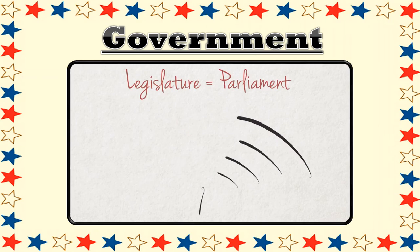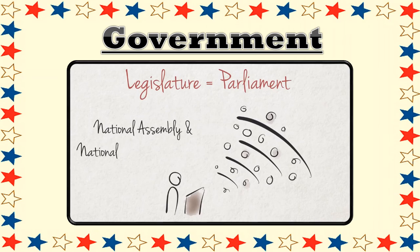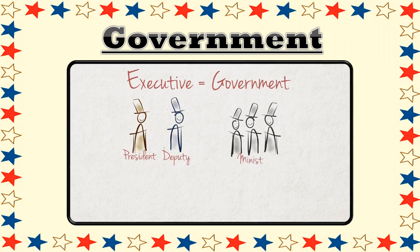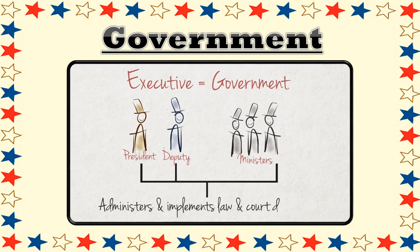The legislature is also known as parliament and consists of the National Assembly and the National Council of Provinces. It is where laws are debated and passed. The second branch of government, the executive, is represented by the President, Deputy President, and the Cabinet of Ministers. It administers and implements the laws of the legislative and the court decisions of the judiciary. The word government often refers to the executive alone, as it governs the country and takes care of the day-to-day running of the state.